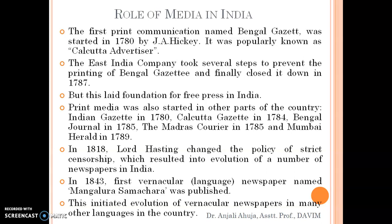We will see the history of media in our country. The starting point dates back to 1780. The first print media, named Bengal Gazette, was started in 1780 by J.A. Hickey and was popularly known as the Calcutta Advertiser. As the name shows, the basic purpose of this print media was advertisement. But later on, the East India Company tried to stop it and prevent the printing of Bengal Gazette, and they were successful in 1787. This laid the foundation for free press in India, and various other people were motivated by this and started print media in various parts of the country.